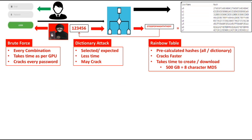In the rainbow table, these are pre-calculated hashes, so less time is required to compare hashes with those found in the password file. However, more time is required to build these pre-calculated hashes. You may download a rainbow table or build your own.